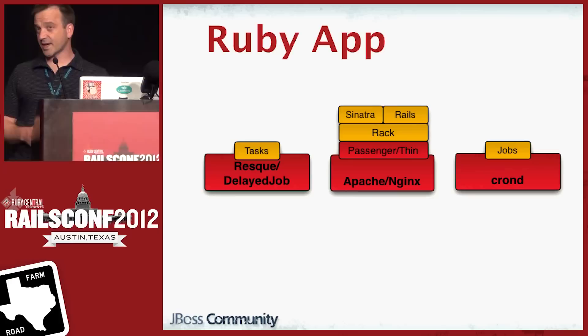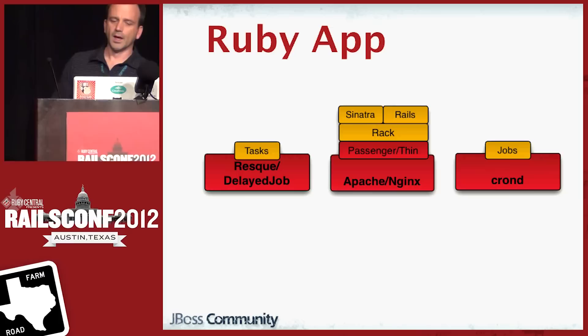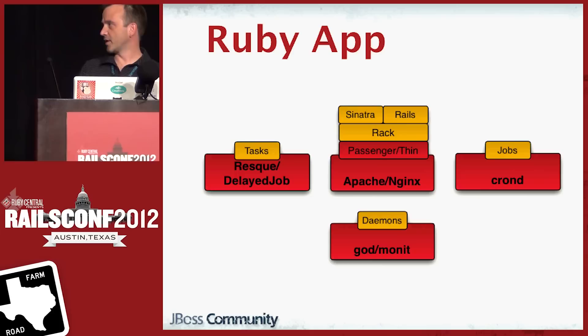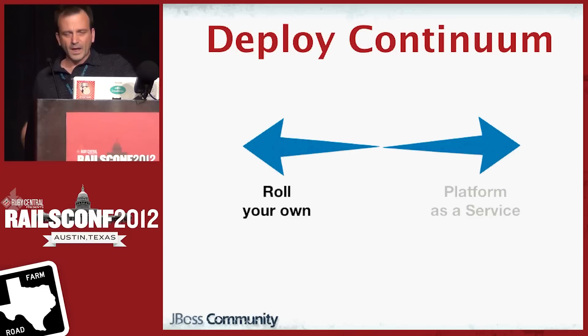Another source of complexity might be scheduled jobs — anything that needs to happen on a regular basis. Maybe you want to send a monthly newsletter out, and you handle that through crontab. And then finally, you might have some kind of long-running process or daemon. Maybe your app wants to process tweets about Justin Bieber, so you have a long-running process that opens up a connection to the Twitter firehose, grabs all those tweets, and stuffs them in your database. Again, a little more complexity — you have to think about how you're going to get that long-running process up and running and manage it.